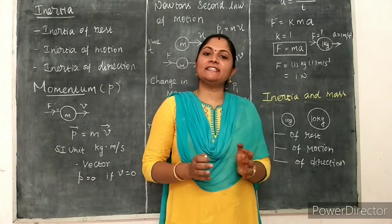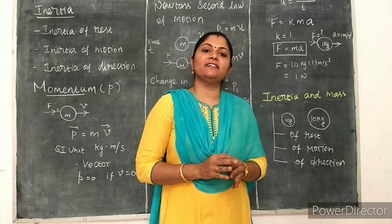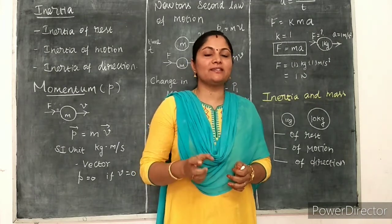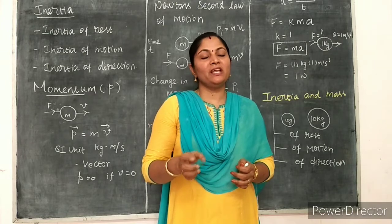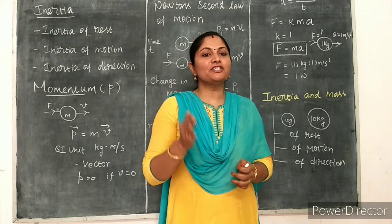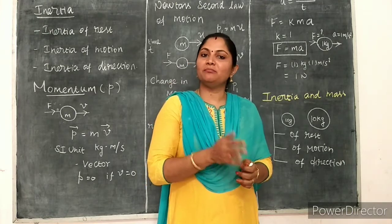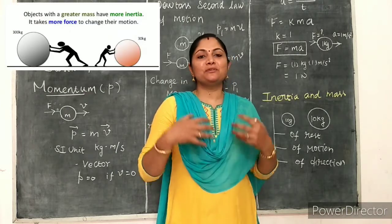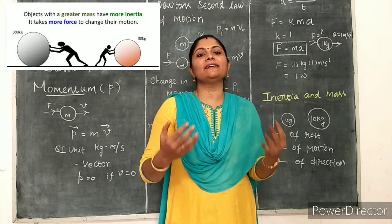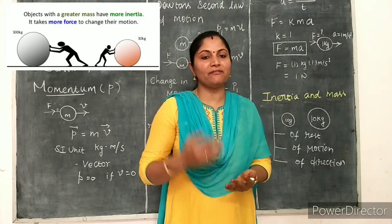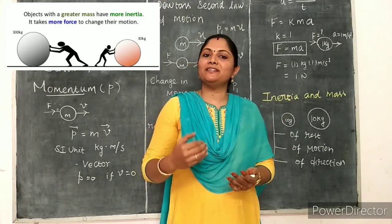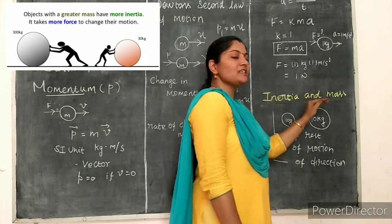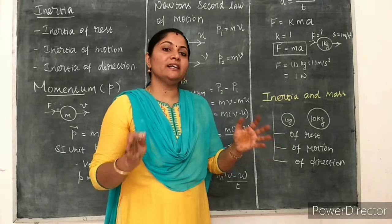Inertia means it is the tendency of an object to resist the change of its state of rest or its motion. Mass is the measure of inertia because inertia is directly proportional to the mass of an object. When mass is greater, the inertia is also greater. When mass is lesser, the inertia is lesser. So inertia and mass both are related directly.